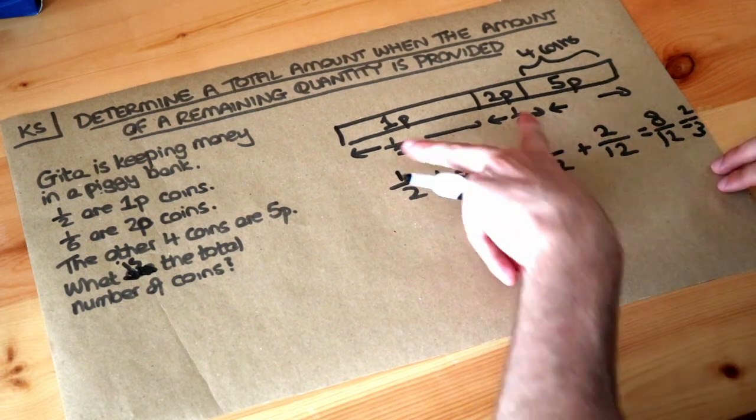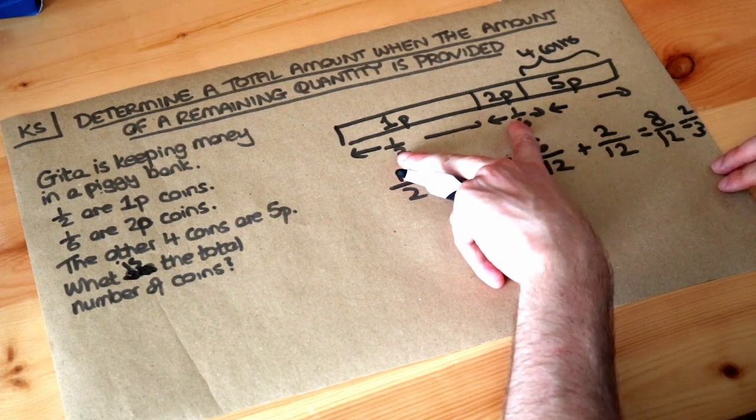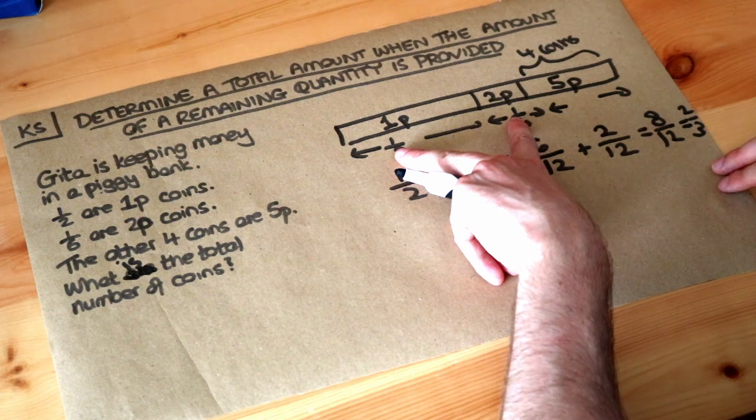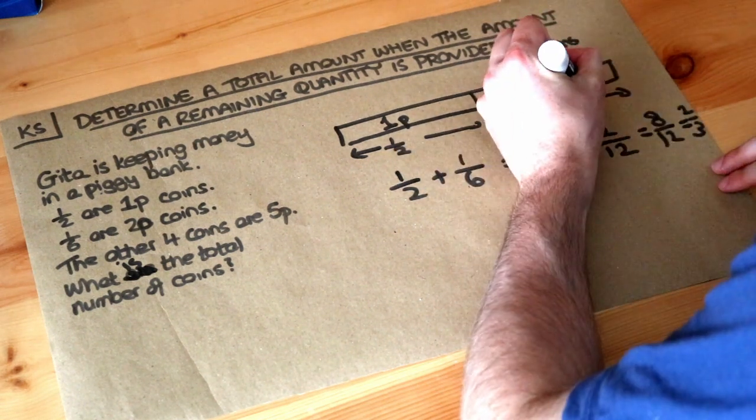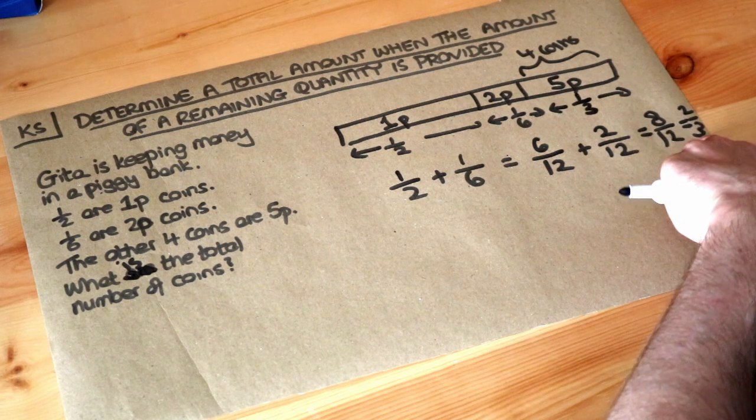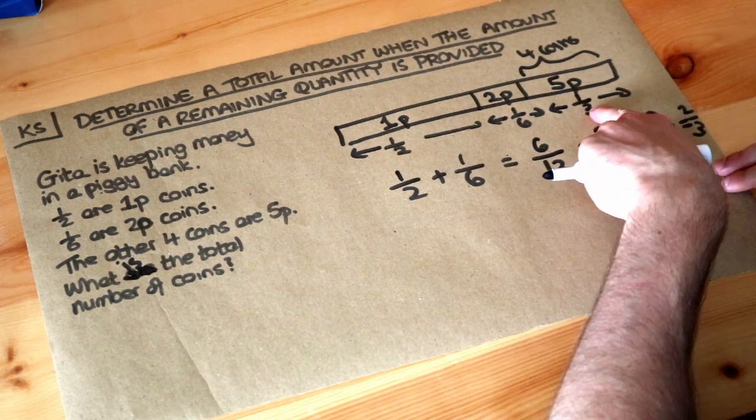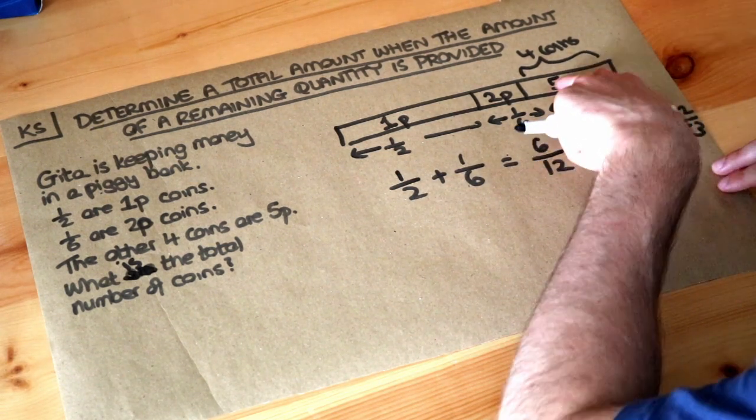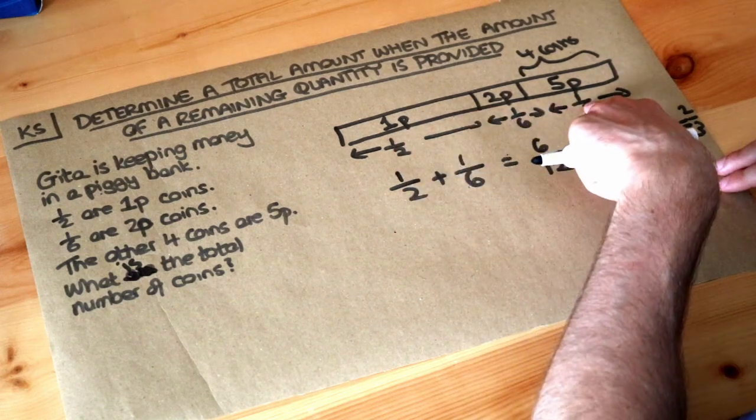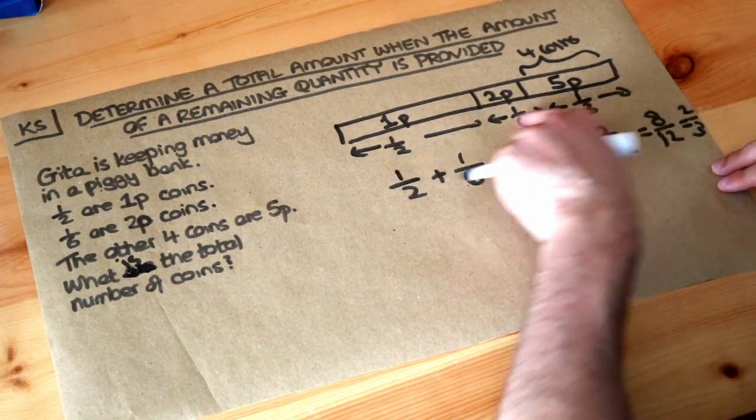So that means two thirds of the coins are either 1p or 2p, so therefore we have a third left because 1 minus two thirds is one third. We know that a third of the coins are 5p. If we add those three fractions together that comes to a whole, all of the coins.